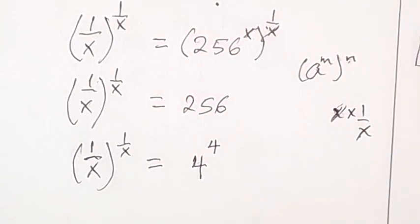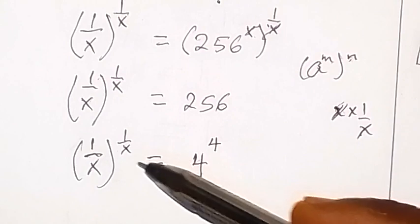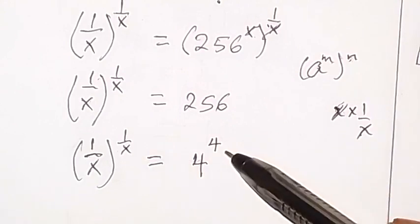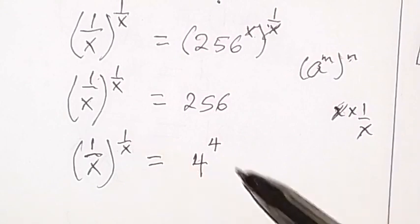And we can see from here that we have 1 over x and it's also raised to power 1 over x, then we have 4, it's also raised to power 4, so same base with the same power.